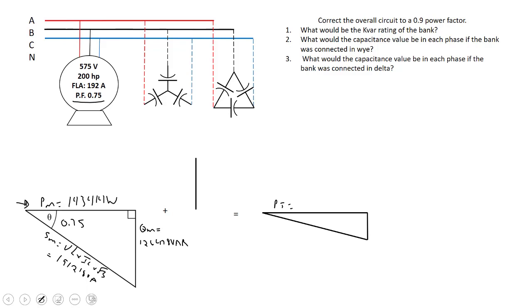What else they want is they're telling us we're going to correct to 0.9. Based off the two values that we have in our triangle, we could go ahead and figure out the apparent power of the circuit after it's been corrected. So I'll take my P total and divide it by 0.9, so that works out to be about 159,349 VA.